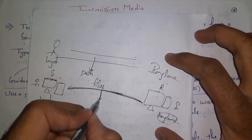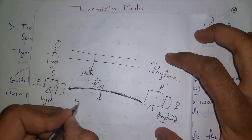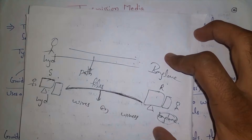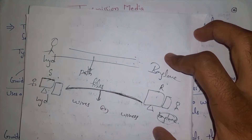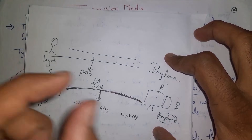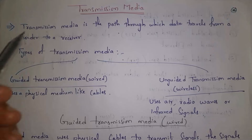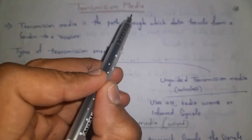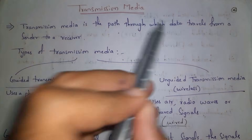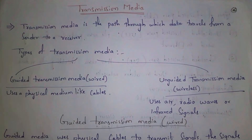We can connect devices by using wires or wirelessly. If we connect devices using wires we call it guided transmission media, and if we connect devices using wireless we call it unguided transmission media. So transmission media is the path through which data travels from a sender to a receiver, and there are two types: guided and unguided.